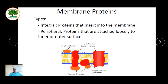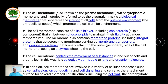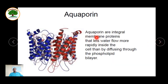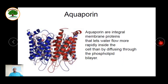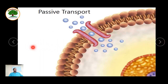A few proteins in between the lipid bilayer help in transport of different components — these are called aquaporins. Aquaporins are integral proteins that let water flow rapidly through the cell by diffusion through the phospholipid bilayer. The membrane protein functions include transportation, enzyme transfer, receptor sites, cell adhesion, and attachment to the cytoskeleton.